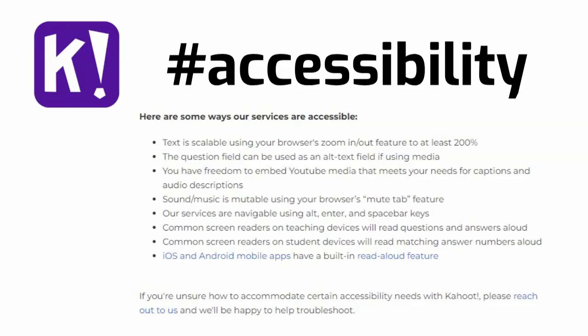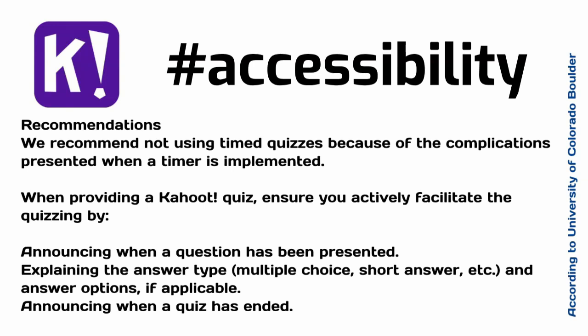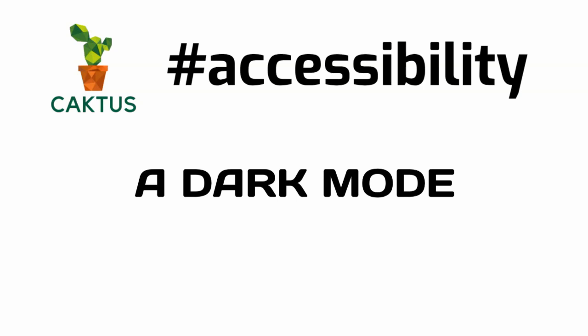Accessibility. As you can see, it's really hard to read something on this website about accessibility. We are able to check it according to University of Colorado Boulder recommendations — for example, about using timed quizzes because of the complications presented when a timer is implemented. Socratic by Google — the Socratic app is incredibly helpful. And Cactus — a dark mode only.